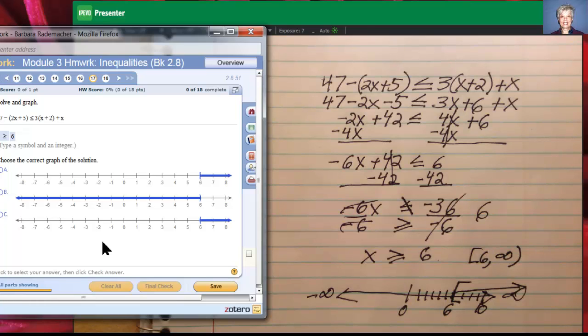We have just, oh no, now it wants us to graph. I did not waste a step. I'm very happy. Here's my graph. And now all I have to do is choose which of these graphs is correct. And there it is. A bracket at 6 and an arrow going off to the right. So I'll click on A and check my answer again.